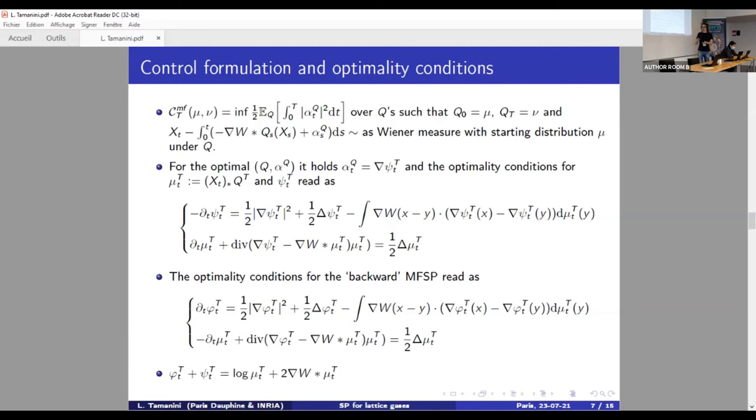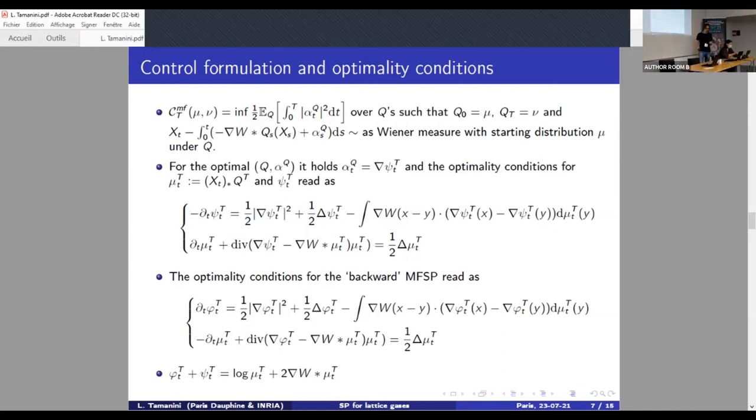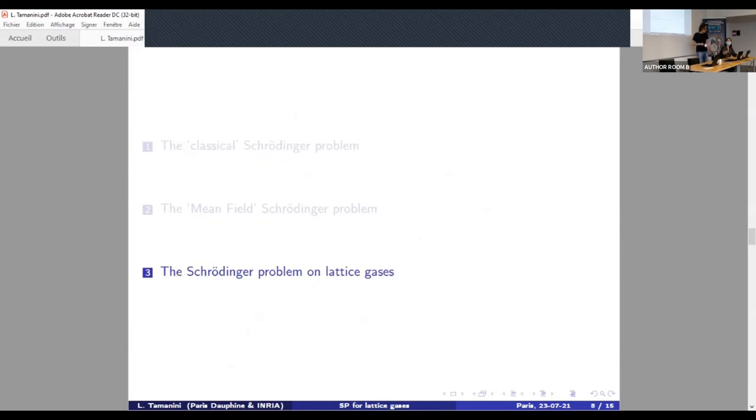And again, if you do a time reversal, we obtain a completely analogous and symmetric system, and the dual variables are related together by this expression, which again extends what was written before for the classic Schrödinger problem, since we add the gradient of the pairing potential. So let me now move to the Schrödinger problem for lattice gases.